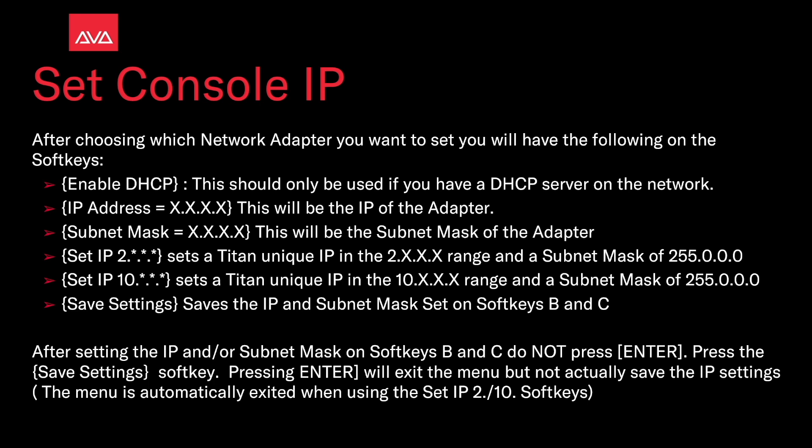SetIP 2.*.*.* sets a Titan unique IP in the 2.x.x.x range with a subnet mask of 255.0.0.0. SetIP 10.*.*.* sets a Titan unique IP address in the 10.x range with a subnet mask of 255.0.0.0. Save Settings saves the IP and subnet mask as set on soft keys B and C.